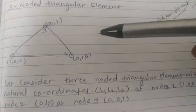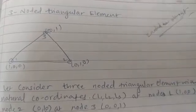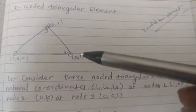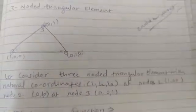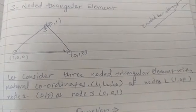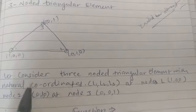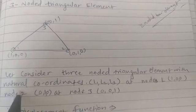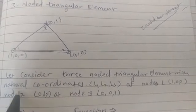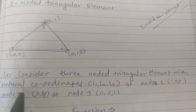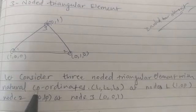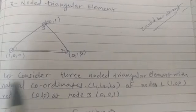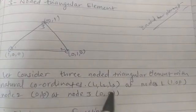We will find out the shape function for a three-noded triangular element. So this is the given triangular element for which we have to find the shape function. Let us consider a three-noded triangular element with natural coordinates. We have not yet discussed the coordinate system, so we will discuss the types of coordinate systems in the next part of this video.